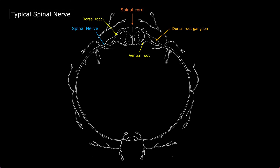Now let us see the other labels. The spinal nerve divides after emerging from the intervertebral foramina. One branch goes anteriorly and one branch goes posteriorly — we call these branches the rami. The one going posteriorly is called the dorsal ramus, and the one going anteriorly is called the ventral ramus.